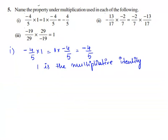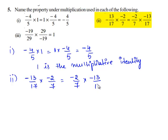Now let us move on to the second bit of the question. The second bit given is -13/17 × -2/7 = -2/7 × -13/17.